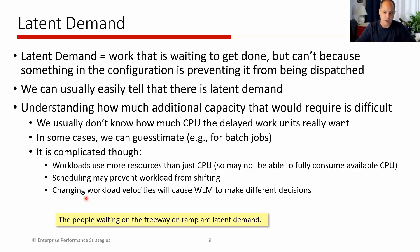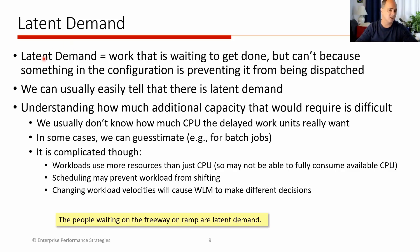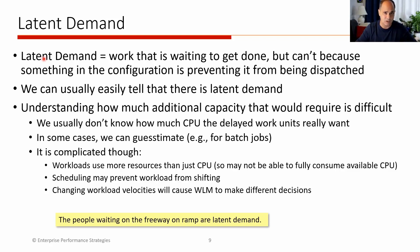What we're doing today is talking about latent demand. The whole point is that we're trying to understand not just that you're a busy environment, but how much work is backing up waiting to get into the system. Latent demand is defined as work waiting to get done but can't get done because there's something in the configuration that's preventing it from being dispatched — something artificial, a resource or something, is holding that workload back from being actually executed. It's typically due to lack of resources for the workload. It's usually easy to tell if you have latent demand, and I'm going to show you some measurements to give you the main indicators. What's more difficult is to understand how much latent demand you actually have.